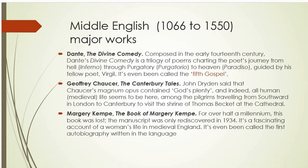Among the major works in Middle English: Dante, the Italian poet, wrote The Divine Comedy, composed in the 14th century — a trilogy of poems charting the poet's journey from Hell through Purgatory to Heaven (Paradise), guided by his fellow poet Virgil. It has even been called the fifth gospel. Geoffrey Chaucer's Canterbury Tales is his magnum opus; John Dryden said it contains 'God's plenty' — indeed all human medieval life seems to be there.